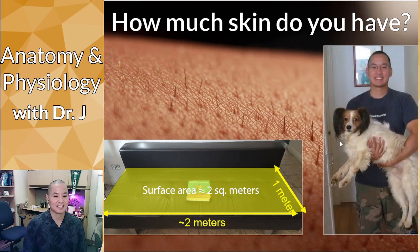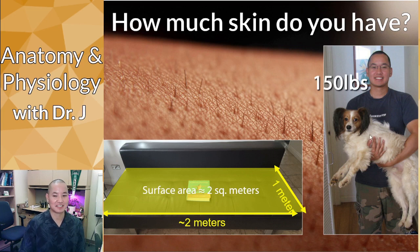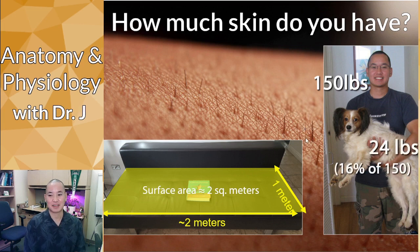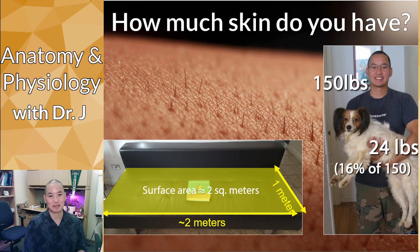Back in the day when I weighed 150 pounds, our family dog Alika weighed 24 pounds. If you took all my skin and weighed it, it would weigh about the same as Alika did — about 24 pounds.